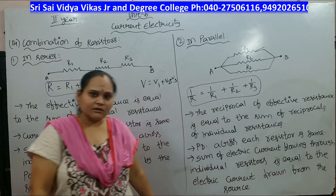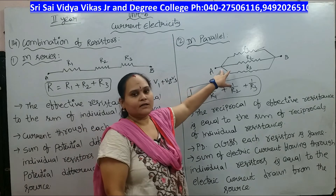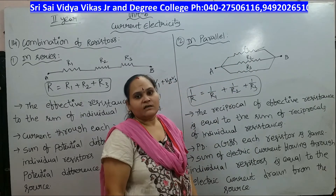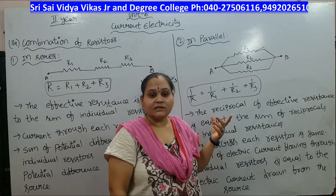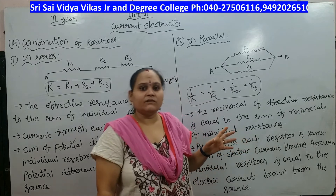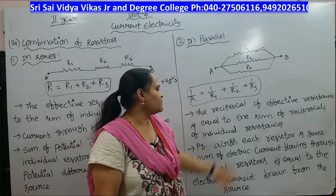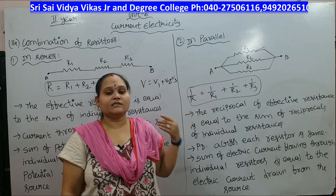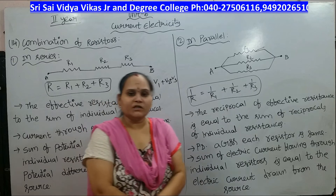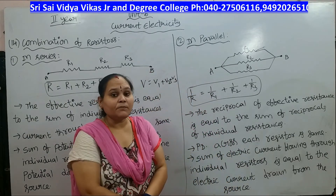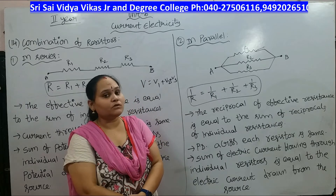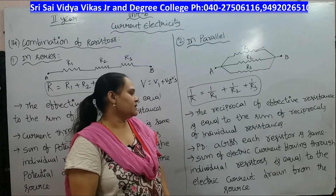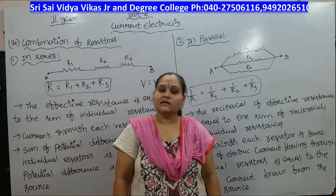In parallel combination, the resistors R1, R2, and R3 are connected in parallel. In this combination, the reciprocal of the effective resistance equals the sum of the reciprocals of individual resistances: 1/R = 1/R1 + 1/R2 + 1/R3.